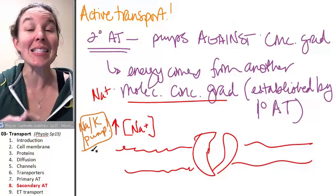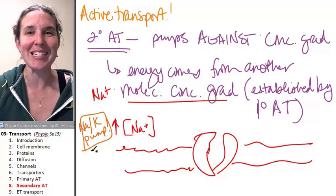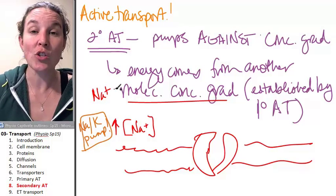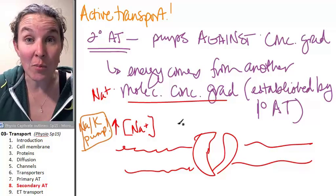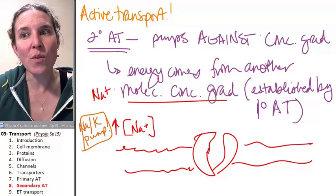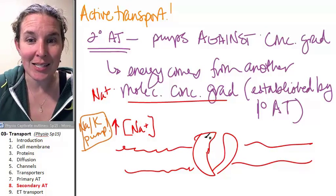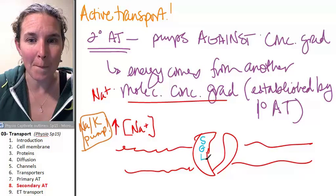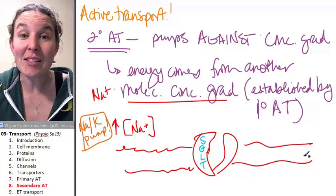now a secondary active transporter can take advantage. So now you have a sodium concentration gradient. This transporter named SGLT says, hey,